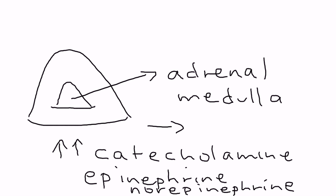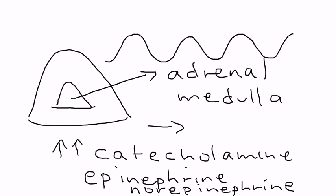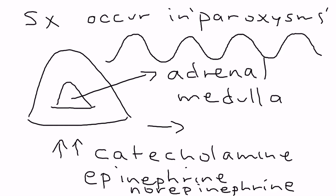These catecholamines can cause some very dramatic symptoms. The tumor tends to release them episodically. So the symptoms occur episodically or in paroxysms. This is a very key word to remember on licensing exams.